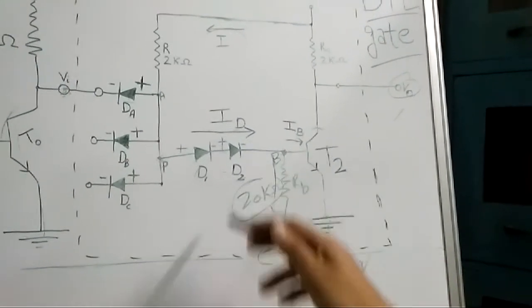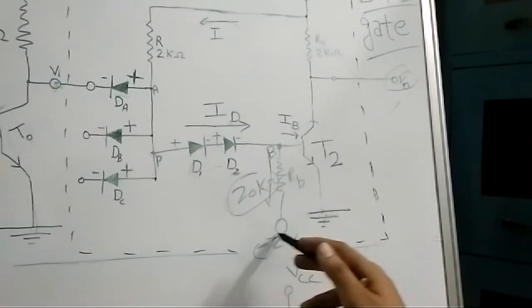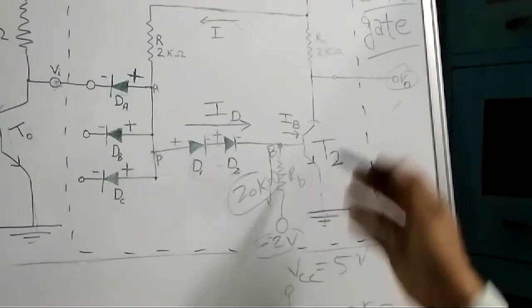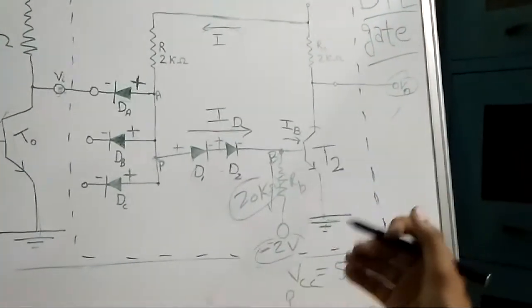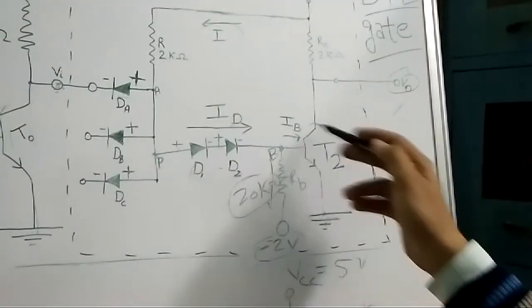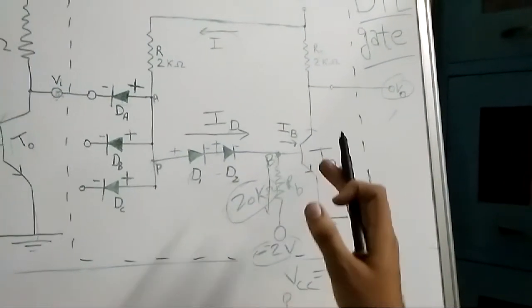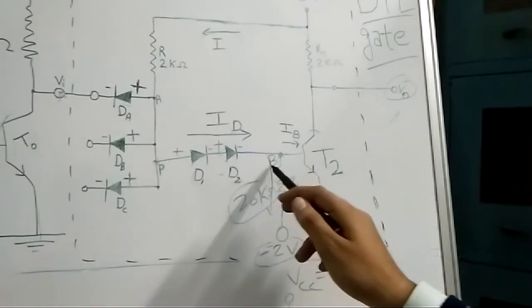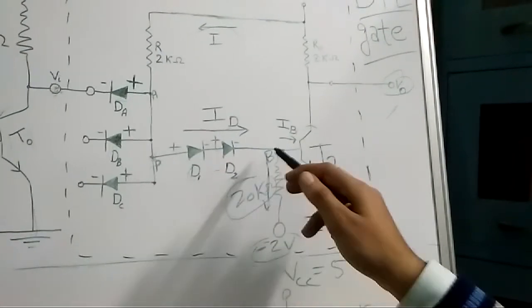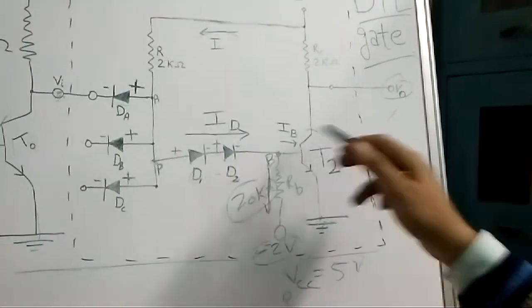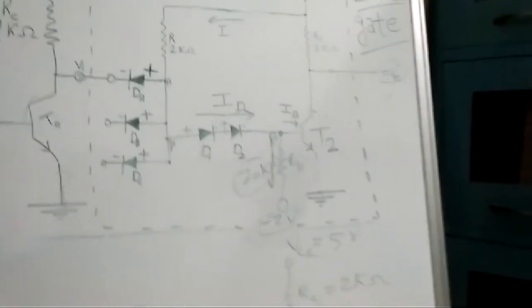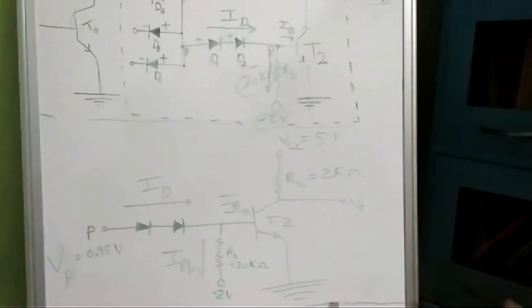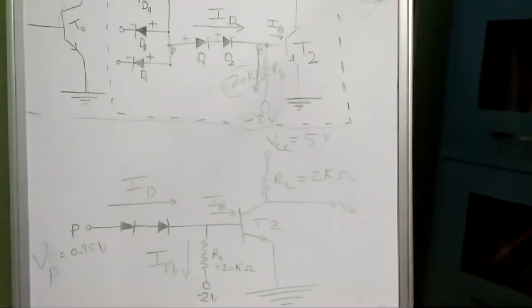This is a condition of compromise: RB must be large enough to ensure sufficient IB for T2 to reach saturation, while the negative supply accelerates the discharge of stored charge in the transistor, improving switching speed. The high resistance limits excessive current loss in the discharge path, and the negative voltage increases the speed of discharging the stored charge, keeping T2 reliably in saturation when needed.